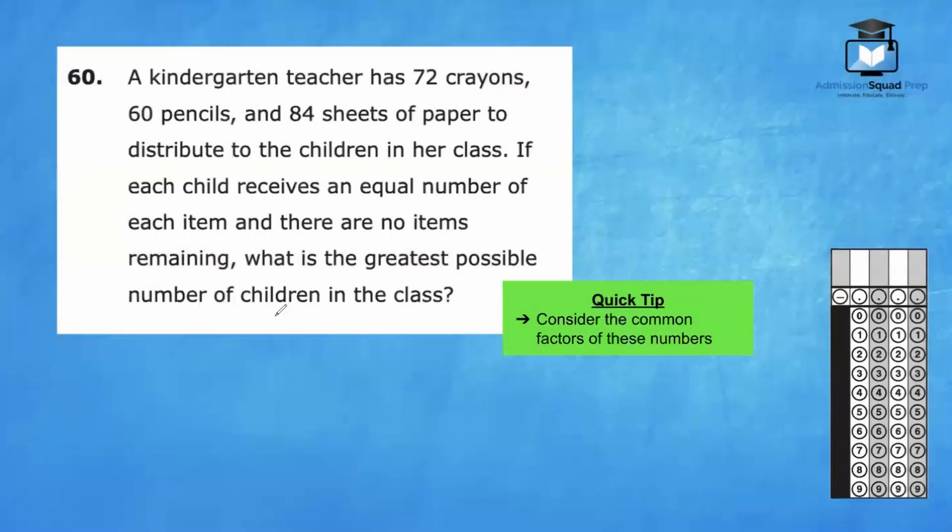Number 60. A kindergarten teacher has 72 crayons, 60 pencils, and 84 sheets of paper to distribute to the children in her class. If each child receives an equal number of each item and there are no items remaining, what is the greatest possible number of children in the class? My first thought is, what number can equally divide into 72, 60, and 84? It might be easiest to write out the factors of the smallest number.